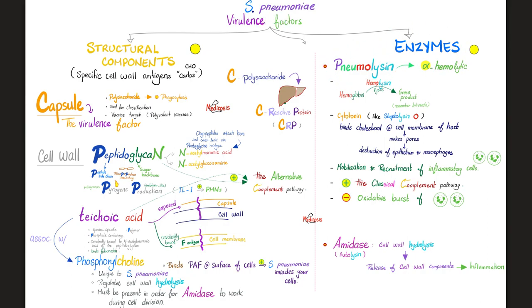Regarding enzymes of Streptococcus pneumoniae: pneumolysin is the cause of alpha hemolysis, because it's a hemolysin that breaks down hemoglobin into green products. It also acts as a cytotoxin, very similar to streptolysin O of Streptococcus pyogenes — it binds cholesterol of your cell membrane, making pores and destroying epithelial cells and phagocytic cells like macrophages. In addition, pneumolysin recruits neutrophils and activates the classical complement pathway, unlike peptidoglycan and teichoic acid which activate the alternative complement pathway.